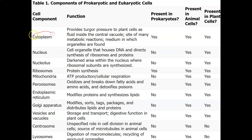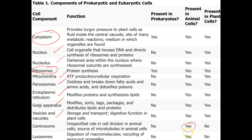Both prokaryotes and eukaryotes have cytoplasm, and both have ribosomes. Eukaryotic cells also have the nucleus, nucleolus, mitochondria, peroxisomes, endoplasmic reticulum, Golgi, vesicles, and vacuoles. The centrosome is only found in animal cells, and lysosomes are only found in animal cells. The chloroplast, cell wall, and large central vacuole are found in plant cells.